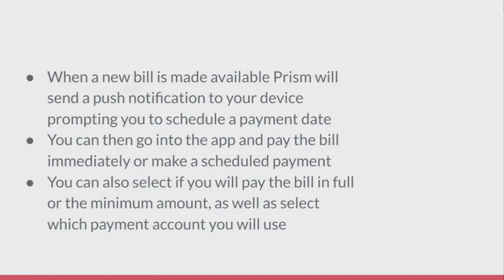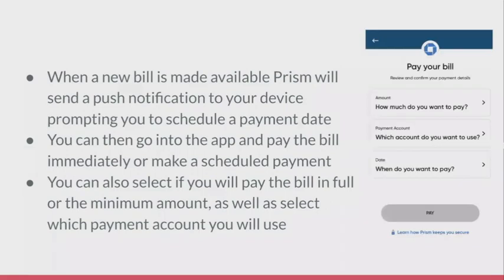You can also select if you will pay the bill in full or the minimum amount, as well as select which payment account you will use. This is what it would look like on the right hand side — it will have you review and confirm your payment details. You will review how much you would like to pay, which account you're using, and the date you want to pay, and after you're done filling out this information you would want to click pay.